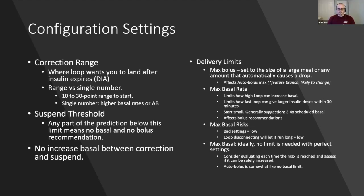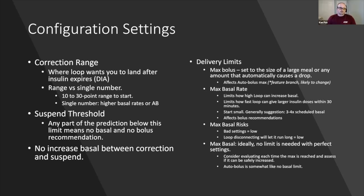Question: if you set a target range, why doesn't Loop try to keep you there? Part of it is because insulin lasts so long. If insulin were faster, it would be easier. Because insulin has such a long tail, it's really difficult. Control-IQ with Tandem does have a target and also uses a 30-minute window to keep you within range — it has some tricks. But Loop is a fairly simple algorithm; it's accurate but doesn't take a lot of corrective action in the short term.